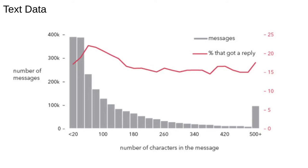Nowadays, a lot of the data we deal with is text. For example, tweets, ads, CVs, Amazon reviews — and I would say the majority of online data is primarily textual. Given this, the field of text analysis has grown immensely and it's used for everything from detecting gender bias to counter terrorism.